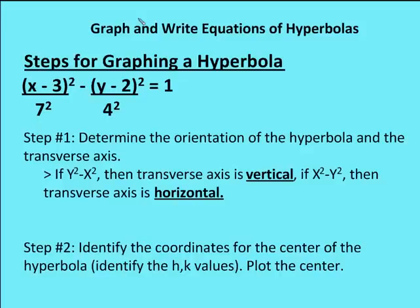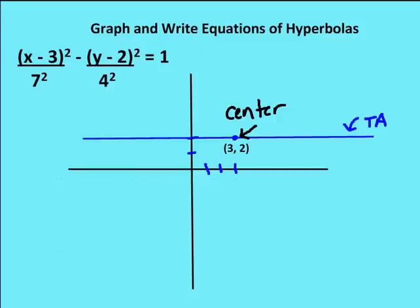Let's talk about the steps for graphing a hyperbola. Step one: determine the orientation of the transverse axis. If the equation has y² − x², the transverse axis is vertical; if x² − y², it's horizontal. Looking at our example equation, we see x squared minus y squared, so the transverse axis is horizontal. Step two: identify the h and k values. In this case, h = 3 and k = 2, so the center is at (3, 2). We mark that on the graph with a horizontal transverse axis through it.